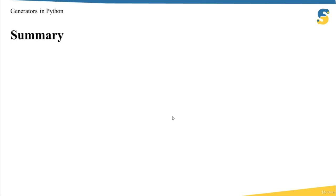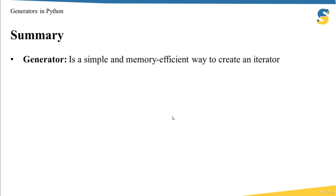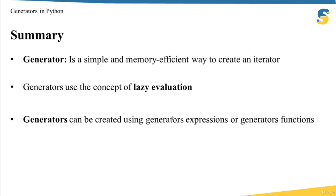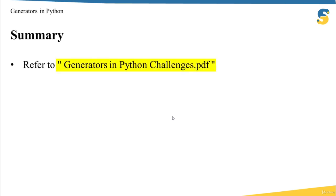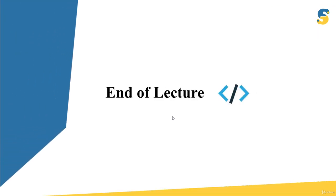To summarize: a generator is a simple and memory-efficient way to create an iterator. Generators are memory efficient because they use lazy evaluation — generating a value only when needed. To create a generator, use either generator expressions or generator functions. In a generator function, the key keyword is yield; using yield within a function automatically converts it into a generator function. Please refer to the generators in Python challenges file to practice. Thank you very much for your time, and join me in the next lecture.